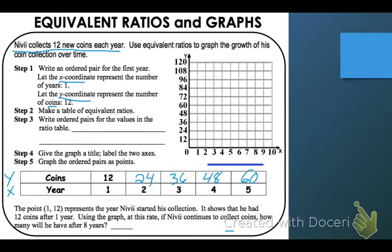And it said 12 coins per year. So that means 2 times 12 is 24, 3 times 12 is 36, all that cool stuff. Now, here's where it gets a little bit hard. It says write ordered pairs for the values in the ratio table.